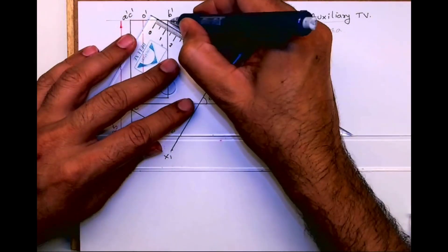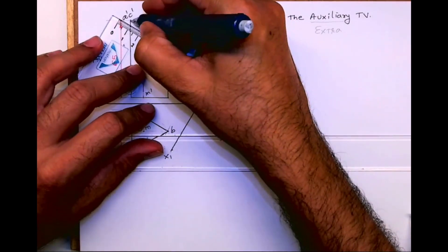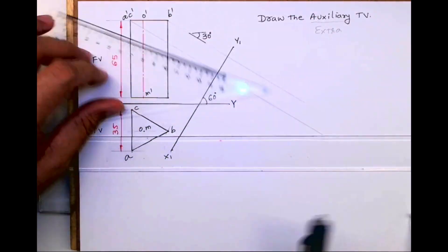Now always remember, whenever you are drawing auxiliary top view, you project from front view. So you will draw 30 degree lines from A dash, C dash, and B dash.